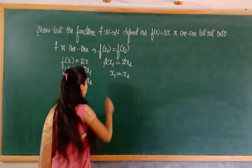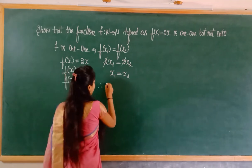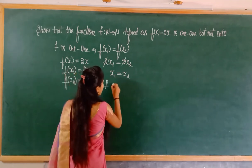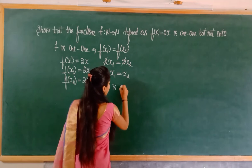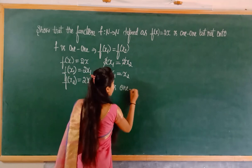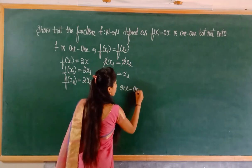Since x1 = x2, therefore f is one-to-one. Now we have to show that f is not onto.